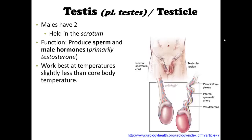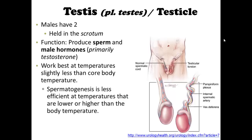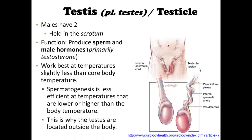The testes work best at temperatures slightly less than the core body temperature, which is why they are held outside of the body. Spermatogenesis is less efficient at temperatures that are higher or lower than body temperature, so the testes being located outside the body helps maintain the optimal temperature for that process.